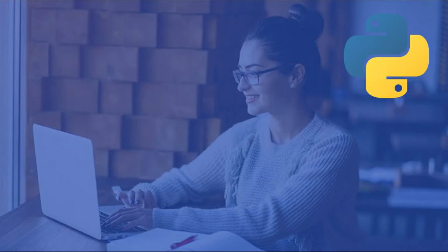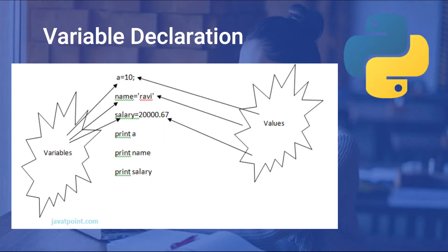To assign a variable, we use the equals sign to assign a value. For example, if we want to declare a variable, we write a equals 10.